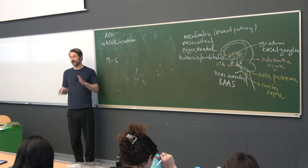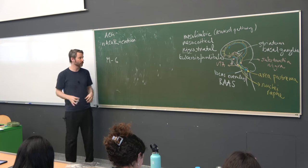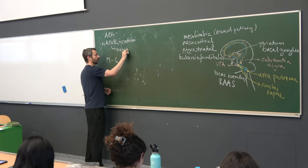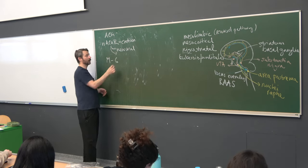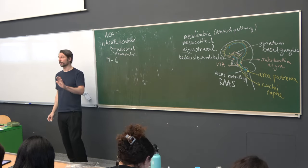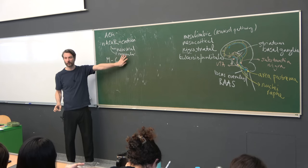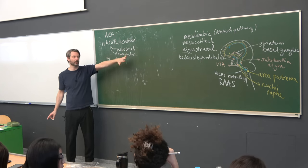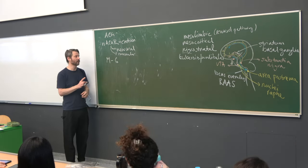Nicotinic acetylcholine receptors have two subtypes. One group is called neuronal — present in neurons. The other subtype is called muscular — found in the neuromuscular junction. These are distinct and we can have different medications that work on one but not the other. They are all composed of many different sub-subtypes, but that's not important at this point.